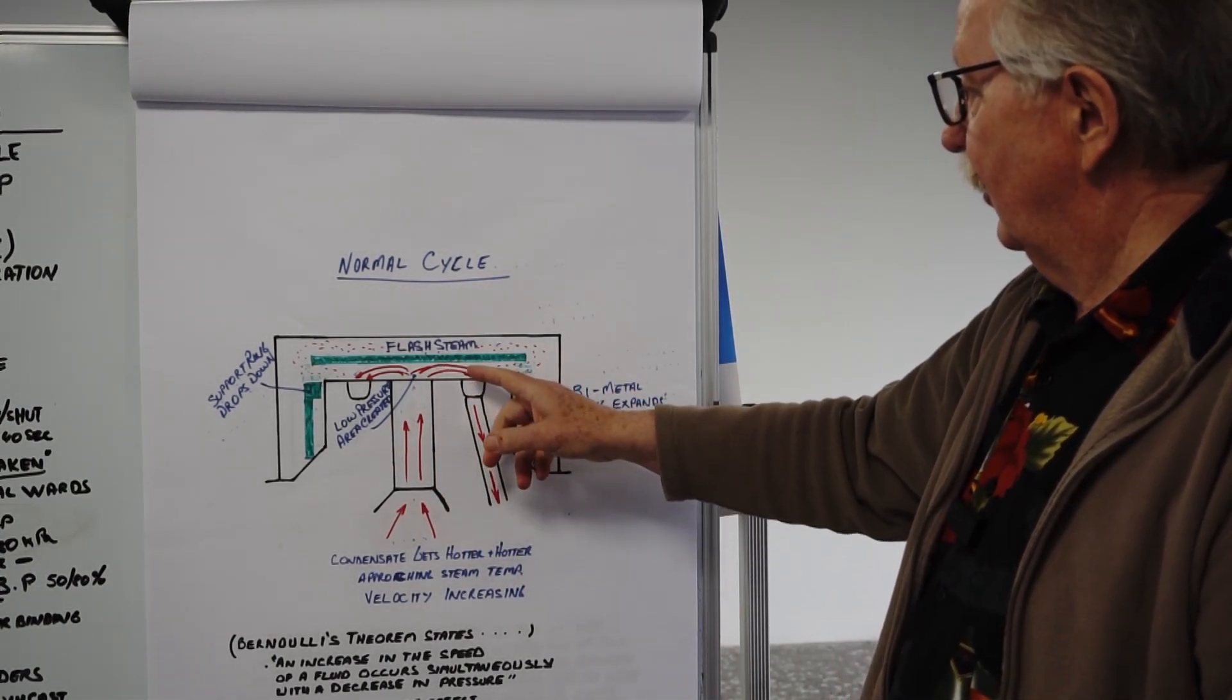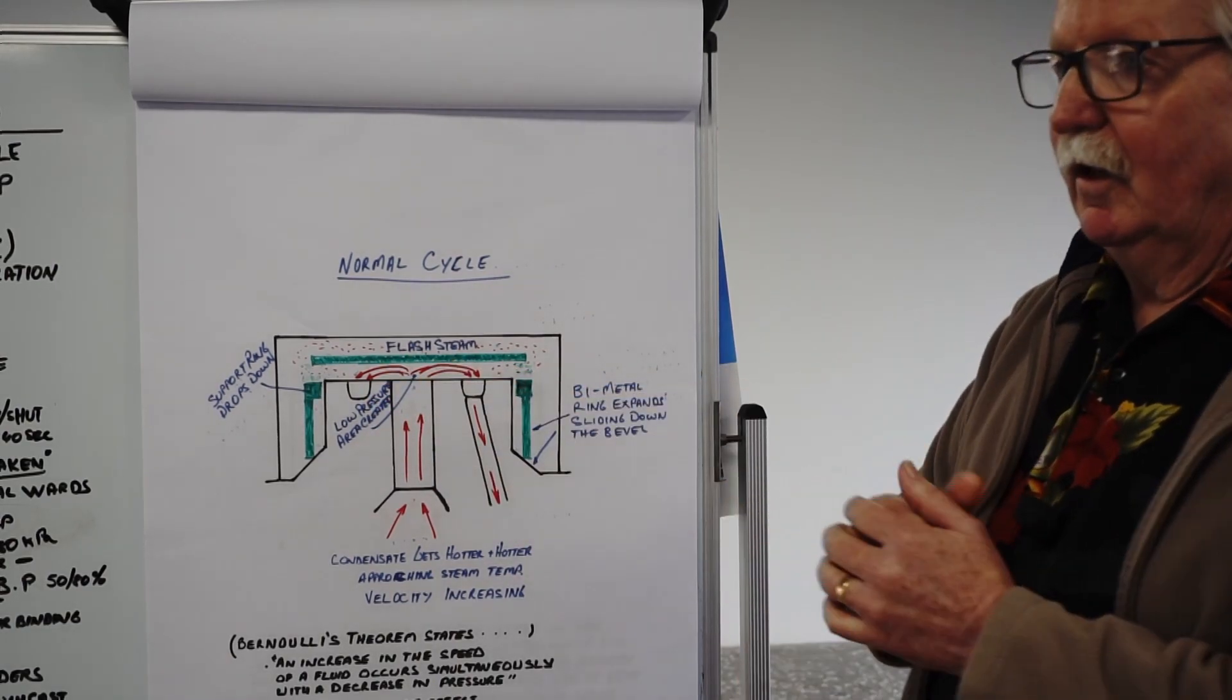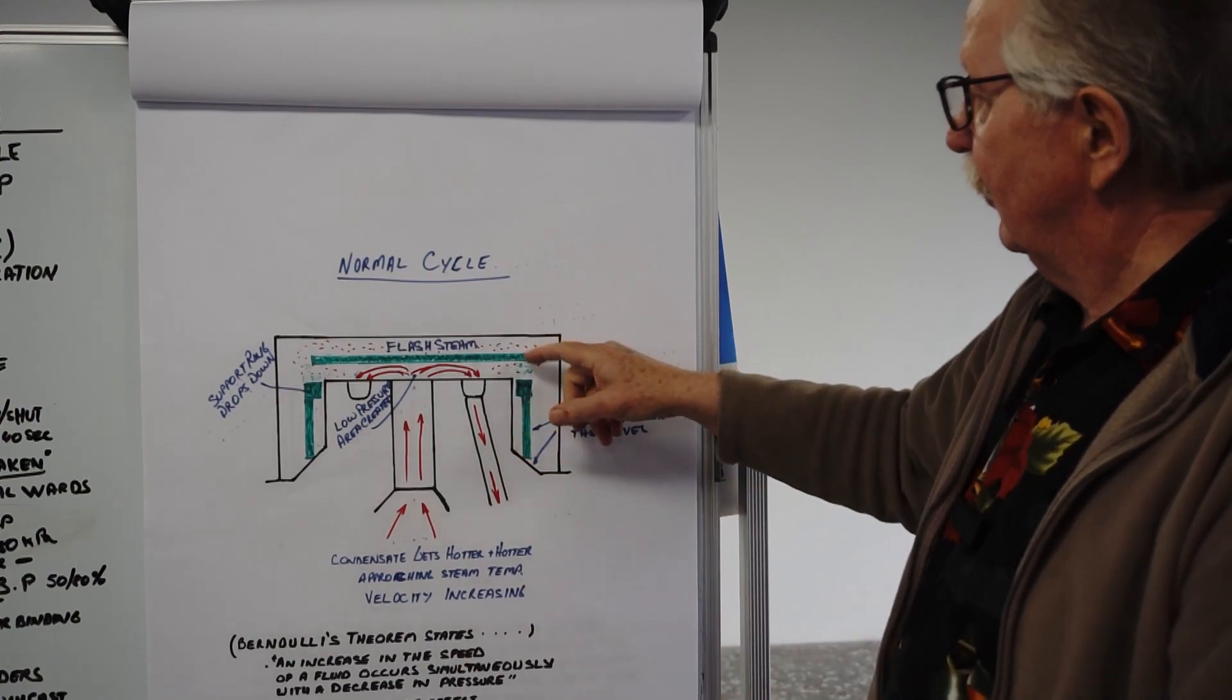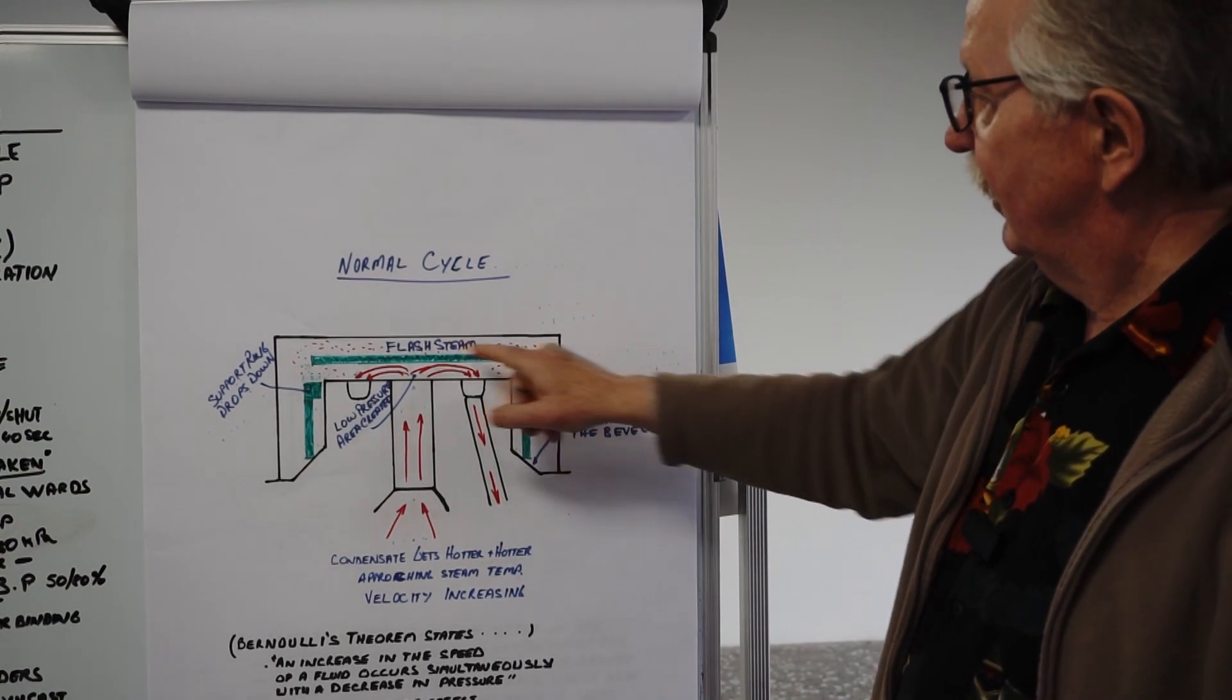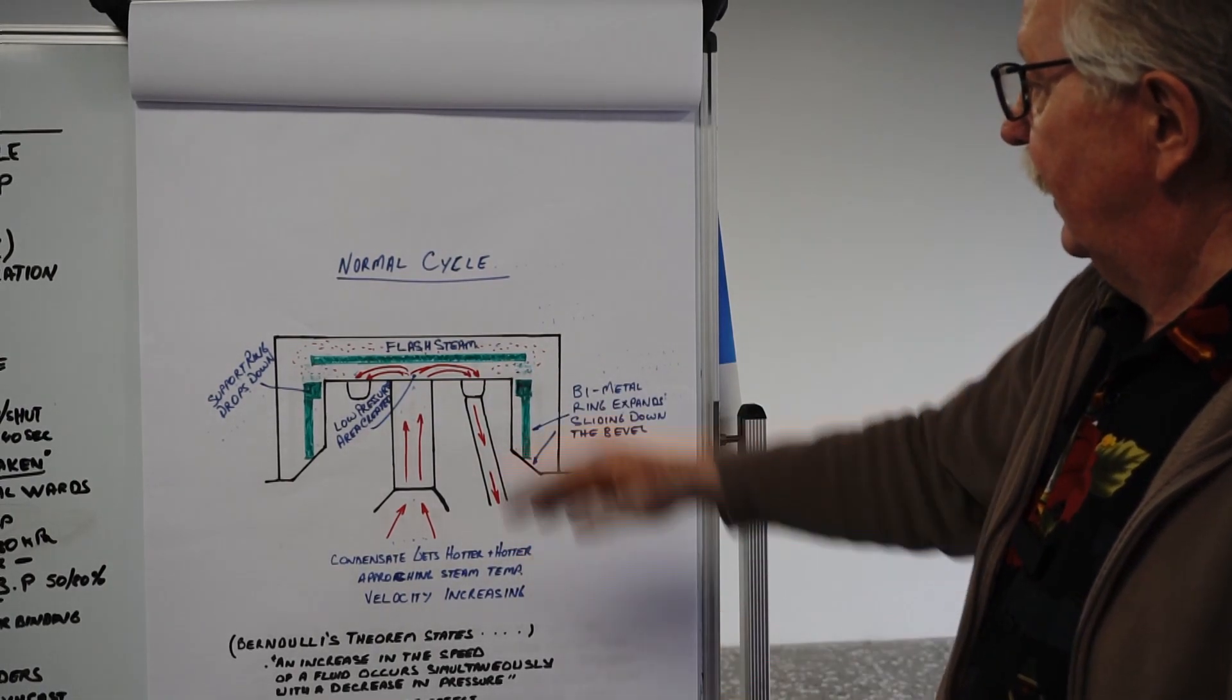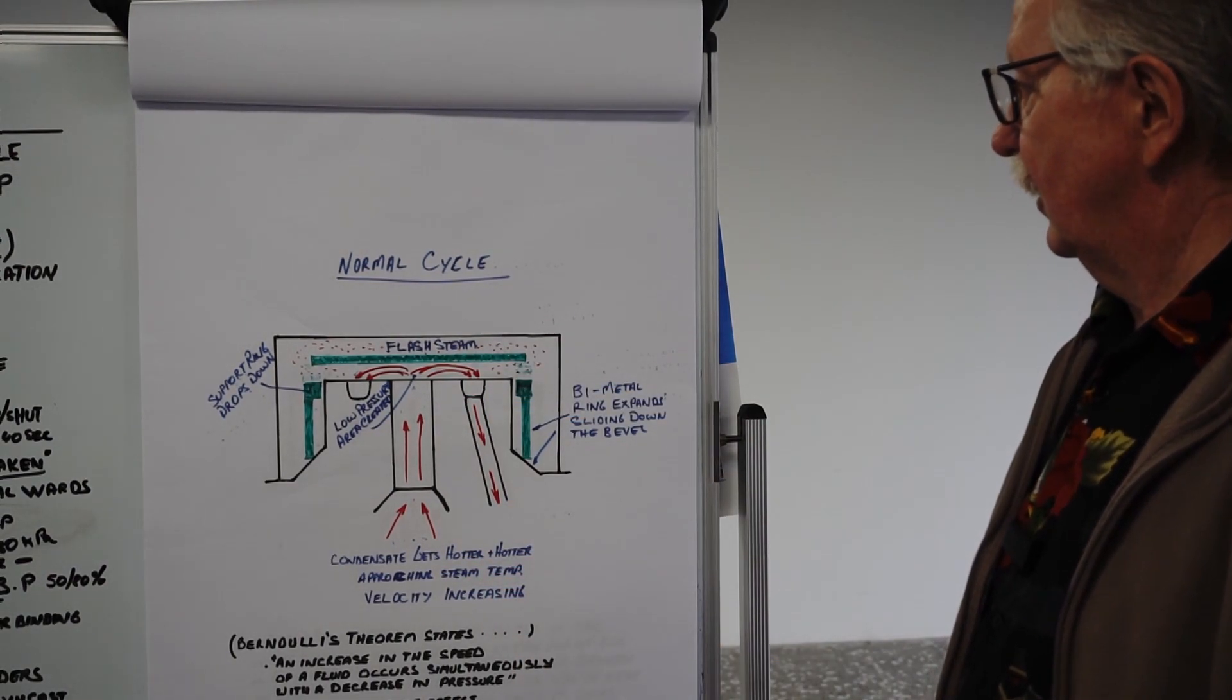When that velocity is fast enough and there's less and less condensate and more steam coming through, the pressure drops here. Any condensate that is in that low pressure area will flash off. So you'll get a certain amount of flash steam that will want to find its way around the disc and up on top of the disc in this control chamber here. As it enters the top of the disc and starts to build up more pressure over the larger surface area there, and that pressure is in excess of what the pressure underneath the disc is, it will snap shut. When it snaps shut, that's your off position and the cycle stops—there'll be no flow through the steam trap.